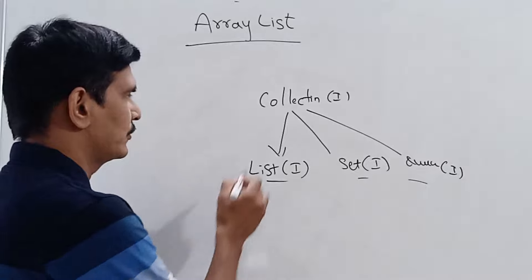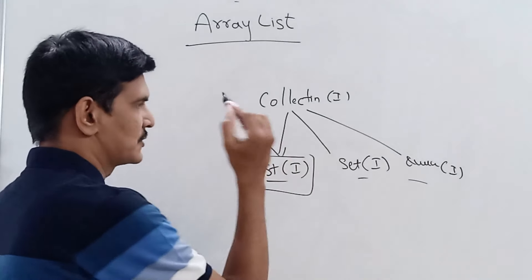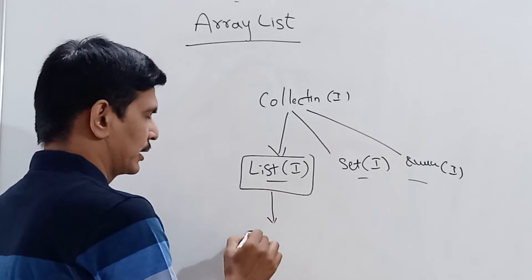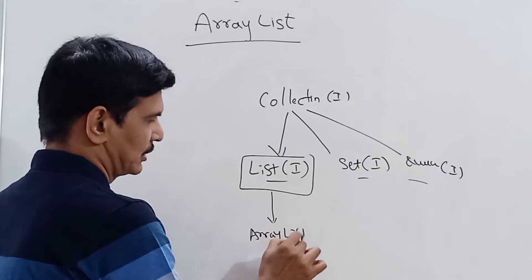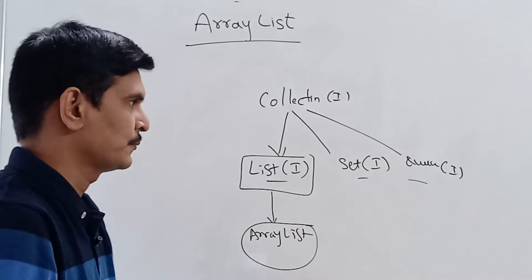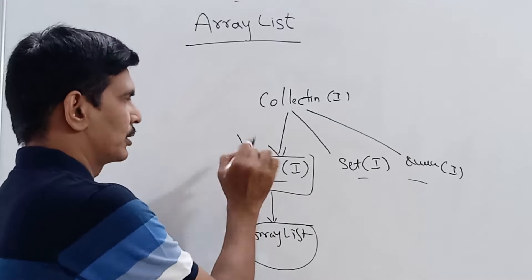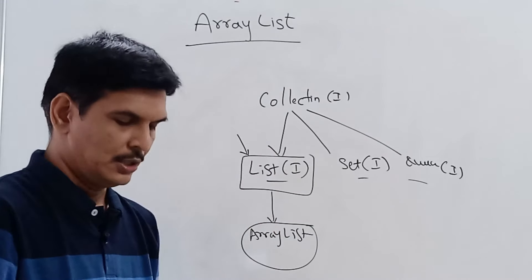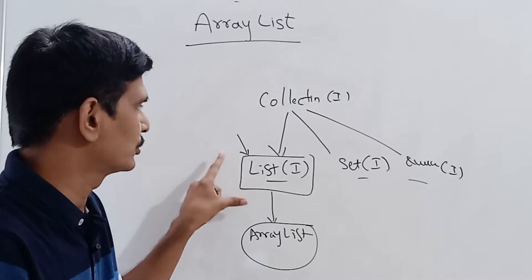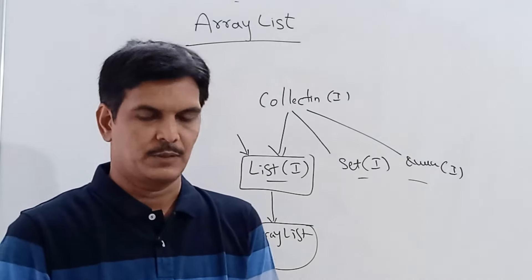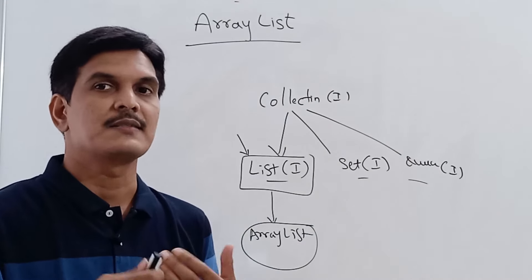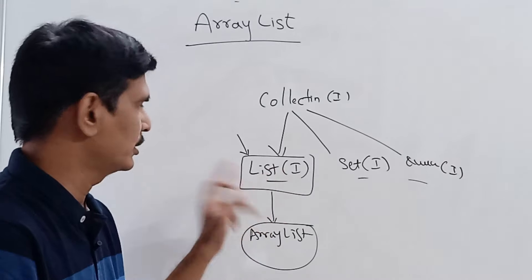Today we are going to mainly focus on the List interface. The List interface is implemented by the ArrayList class. ArrayList is one class which has implemented all methods from the List interface. Whatever rules are applicable for the List interface, the same thing is applicable for ArrayList. We use a List interface when we want to store duplicate elements and where insertion order is preserved.